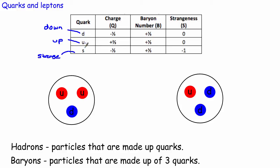Quarks are never ever seen on their own — you never see just a down quark or just an up quark. They always come combined with other quarks. One way quarks can combine is two up quarks and one down quark. Let's think about the charge of this particle: there's a charge of plus two thirds from the first up quark and plus two thirds from the second.